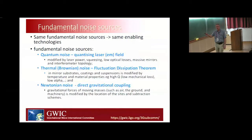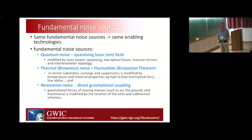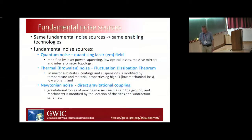Newtonian noise — the direct gravitational coupling between the mirrors and the external environment — is modified by the location and sites you choose, through subtraction schemes, and by being really careful not to pollute a beautiful site you've chosen.